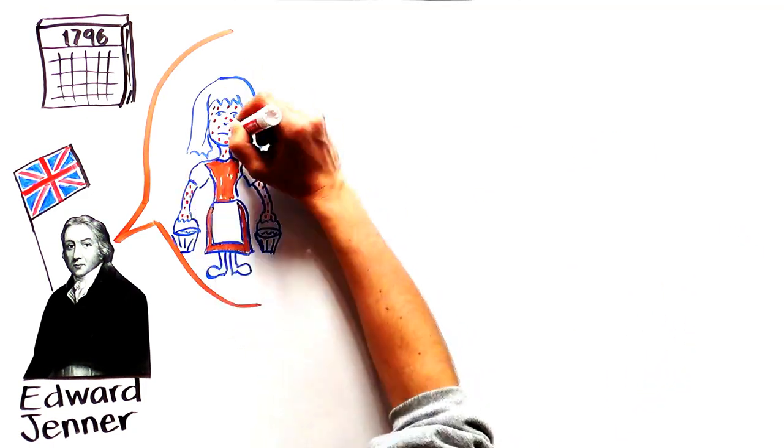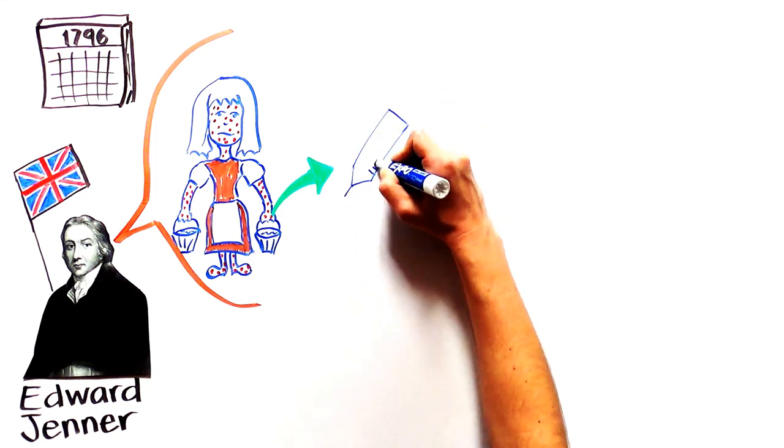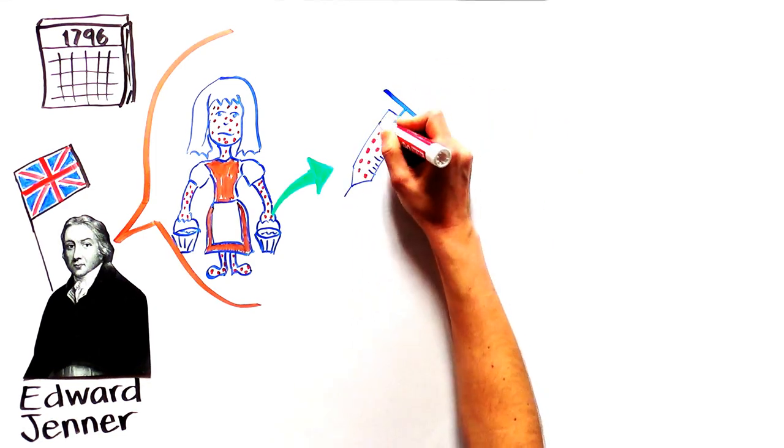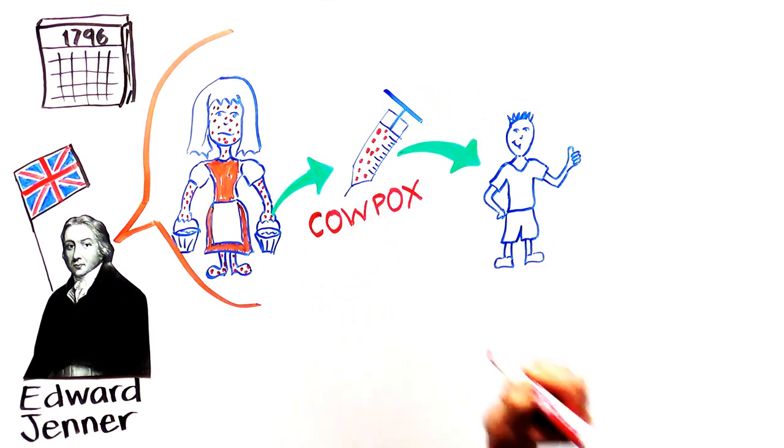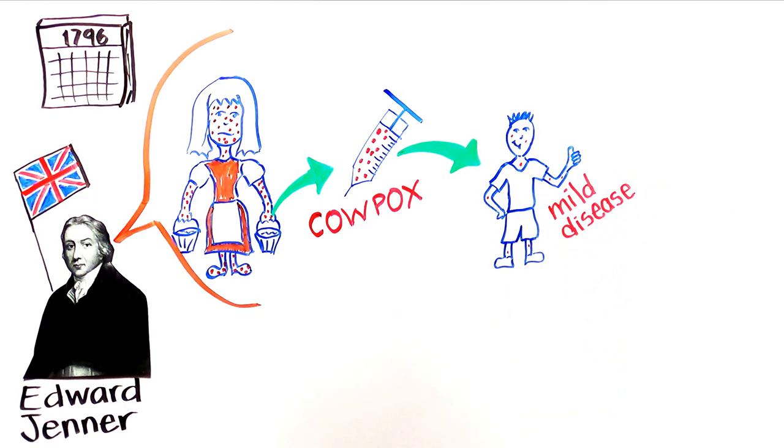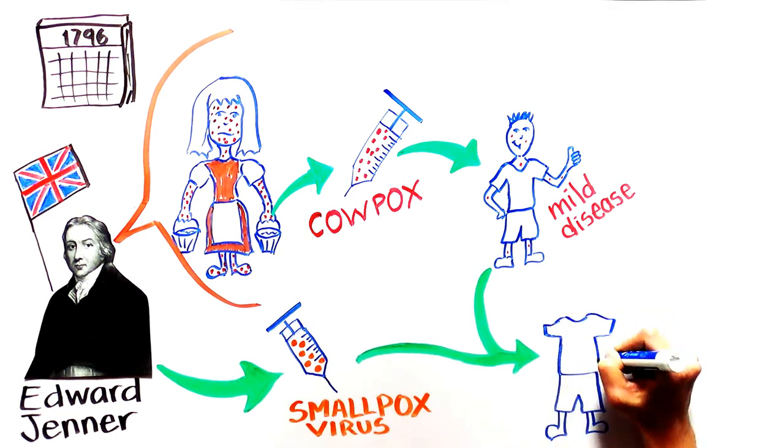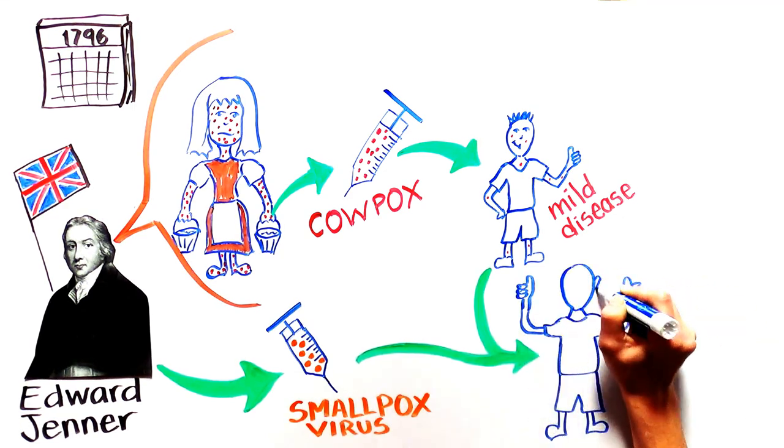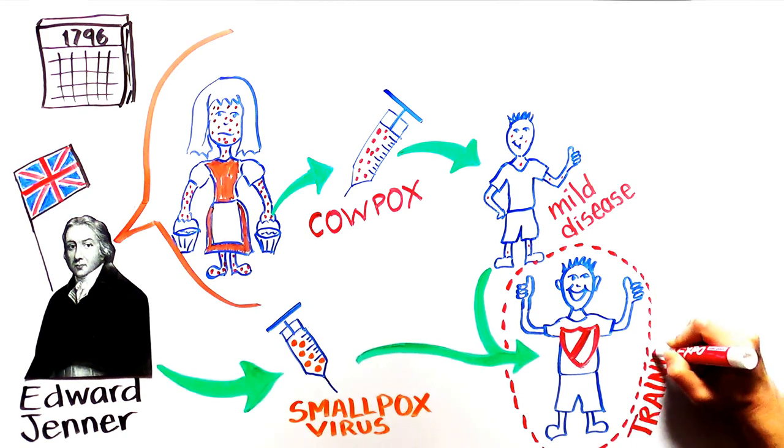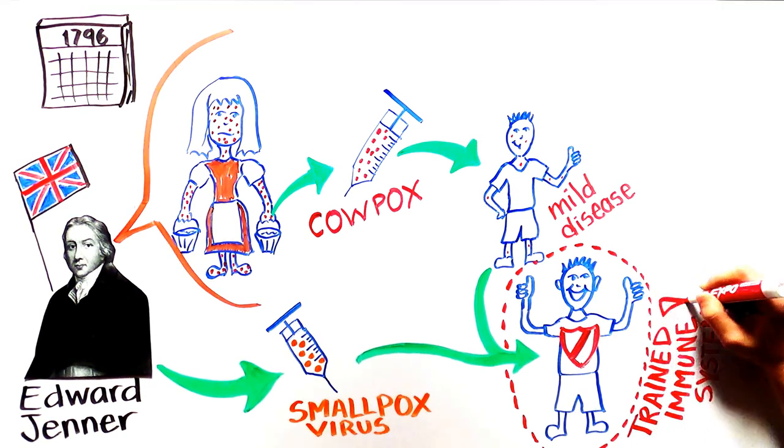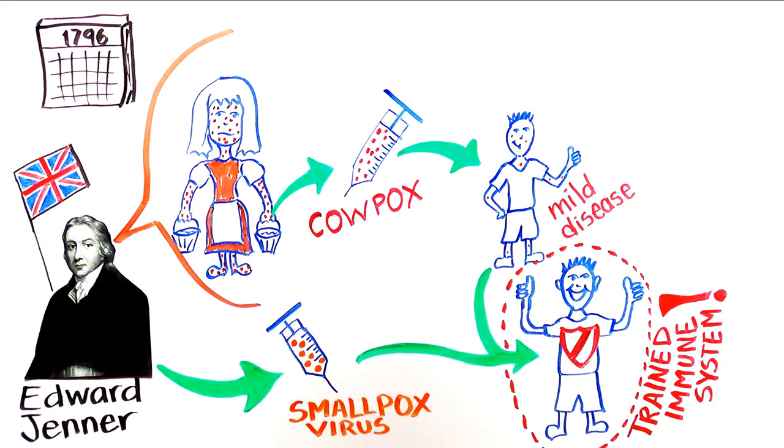Jenner injected an 8-year-old boy with pus he had taken from a cowpox sore on the hand of a milkmaid. The little boy had a mild illness, not at all dangerous like smallpox, and he recovered quickly. When Jenner later deliberately exposed the boy to smallpox, he didn't get sick. His immune system was trained to fight off smallpox infection because of his prior exposure to cowpox.